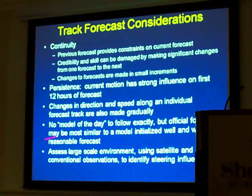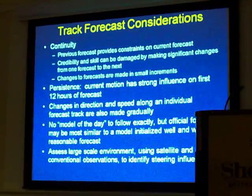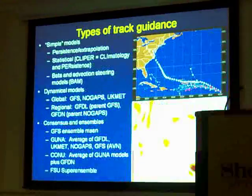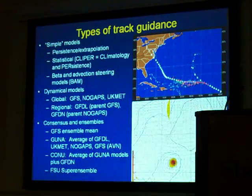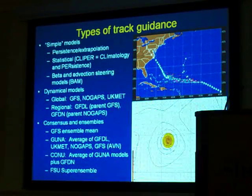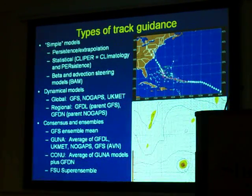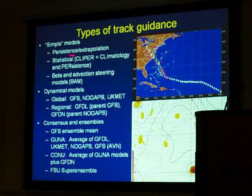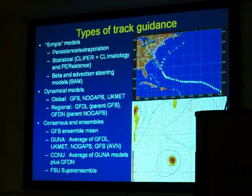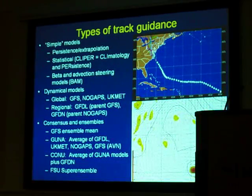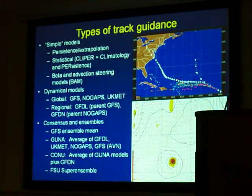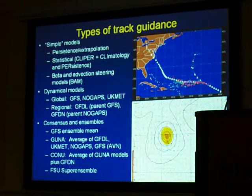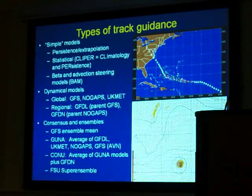What goes into this is assessing the large-scale environment, and to do that we're looking at satellite observations to identify the main steering influences. As an example of the type of track guidance we use — the most simple of them — persistence and extrapolation. The CLIPPER model, which is really not used anymore, is used as a benchmark to gauge how skillful the other dynamical models are.